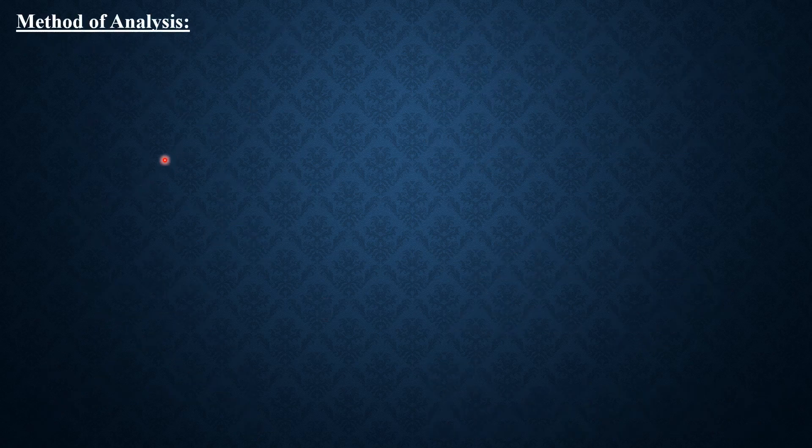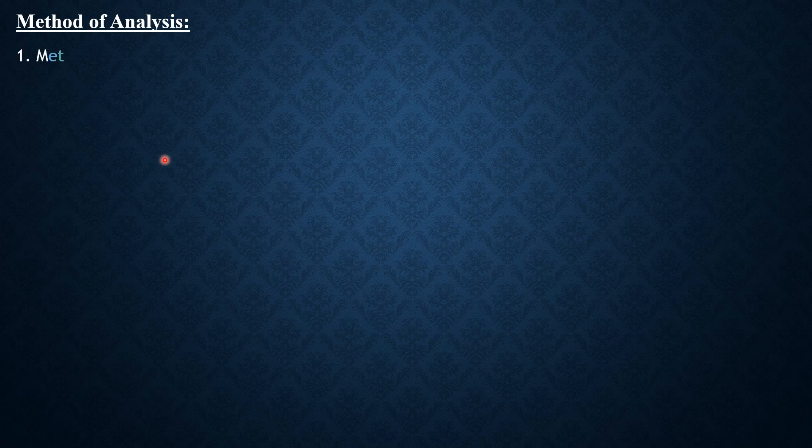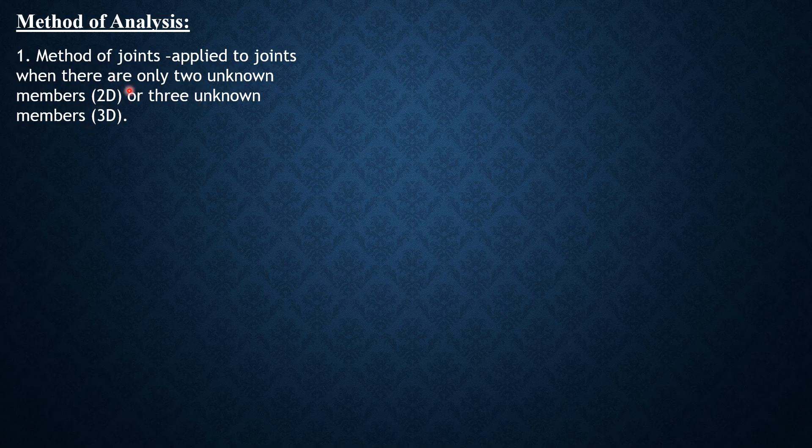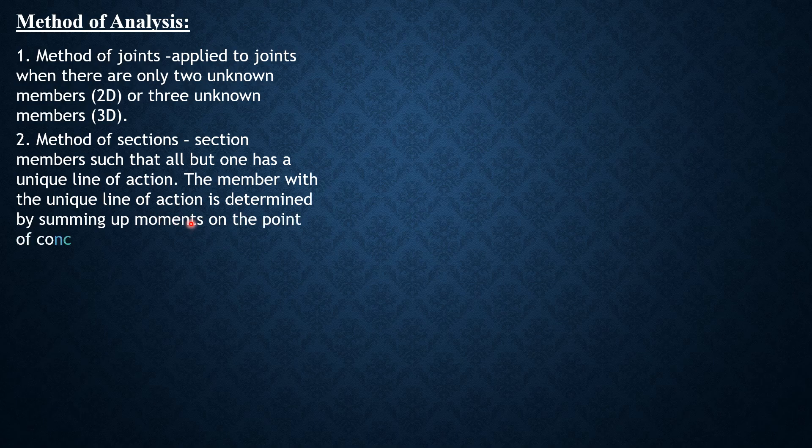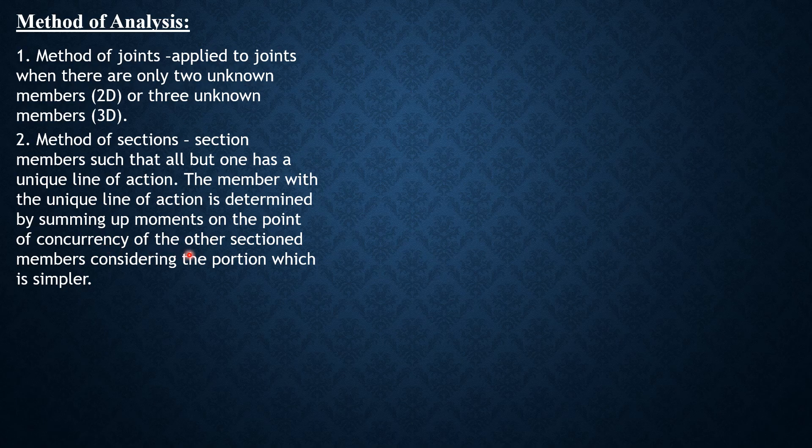For the method of analysis, we have method of joints applied to joints when there are only two unknown members for a 2D truss or three unknown members for a 3D truss. We have the method of sections: we section members such that all but one has a unique line of action. The member with the unique line of action is determined by summing up moments on the point of concurrency of the other section members, considering the portion which is simpler.